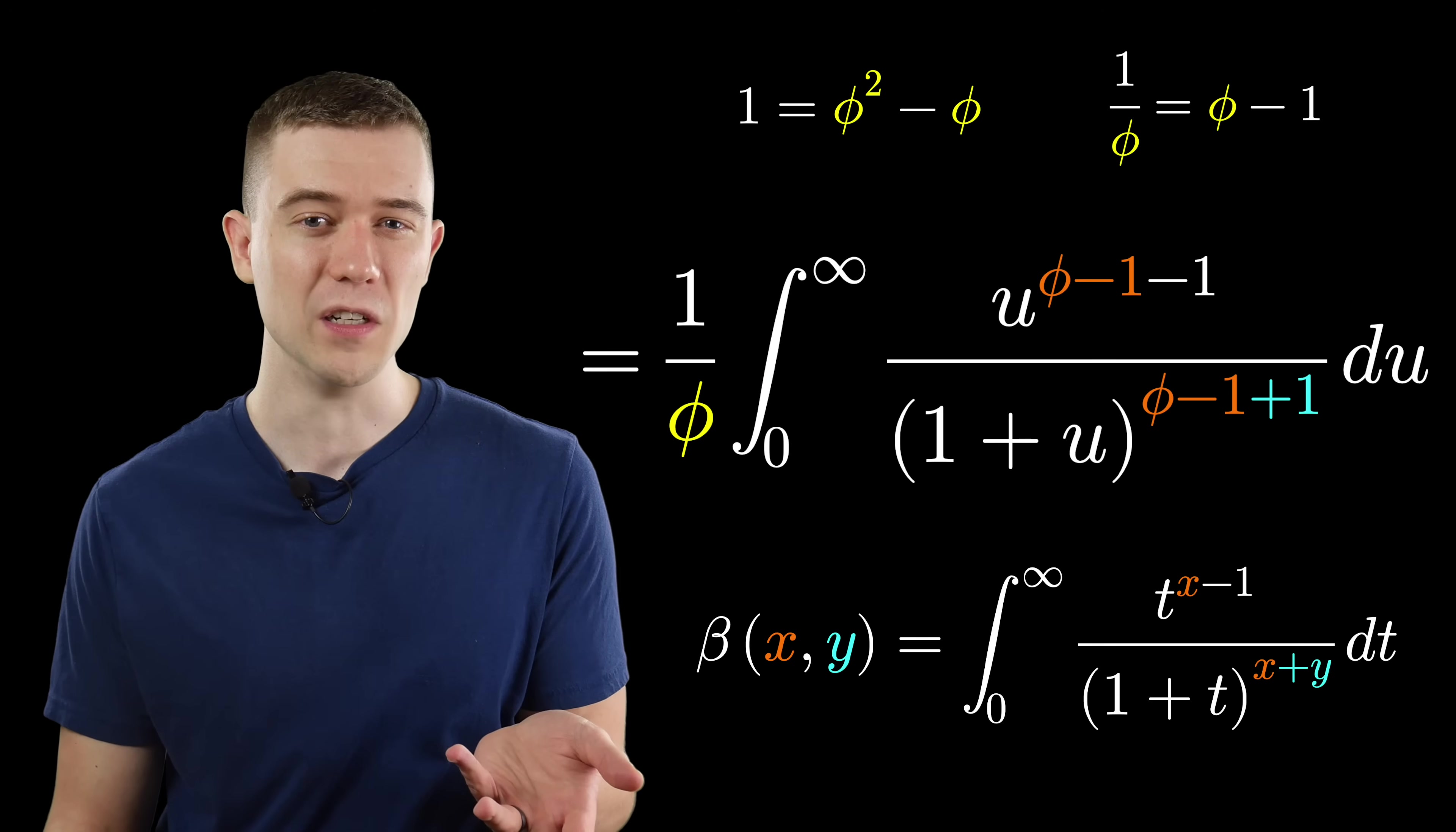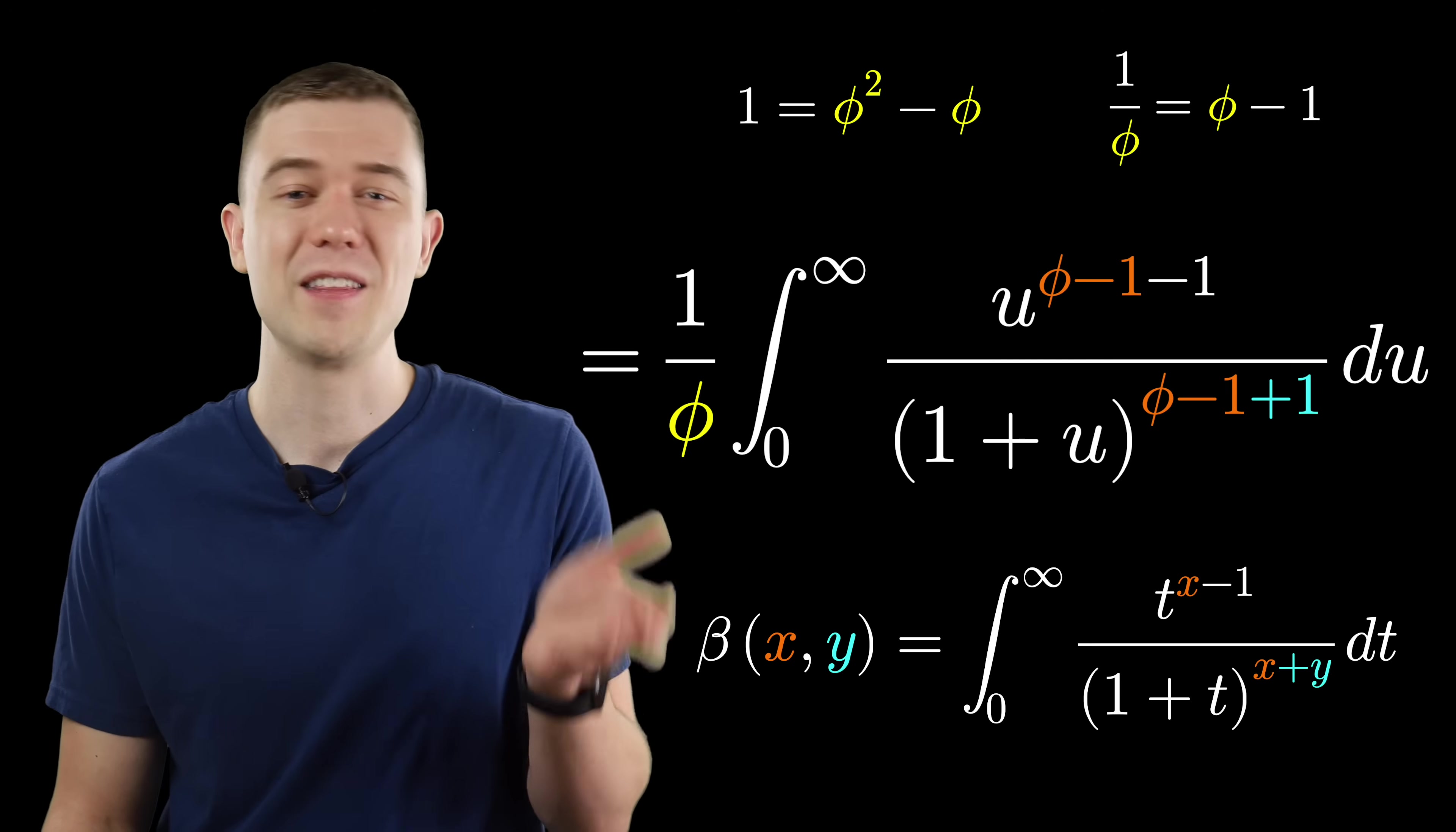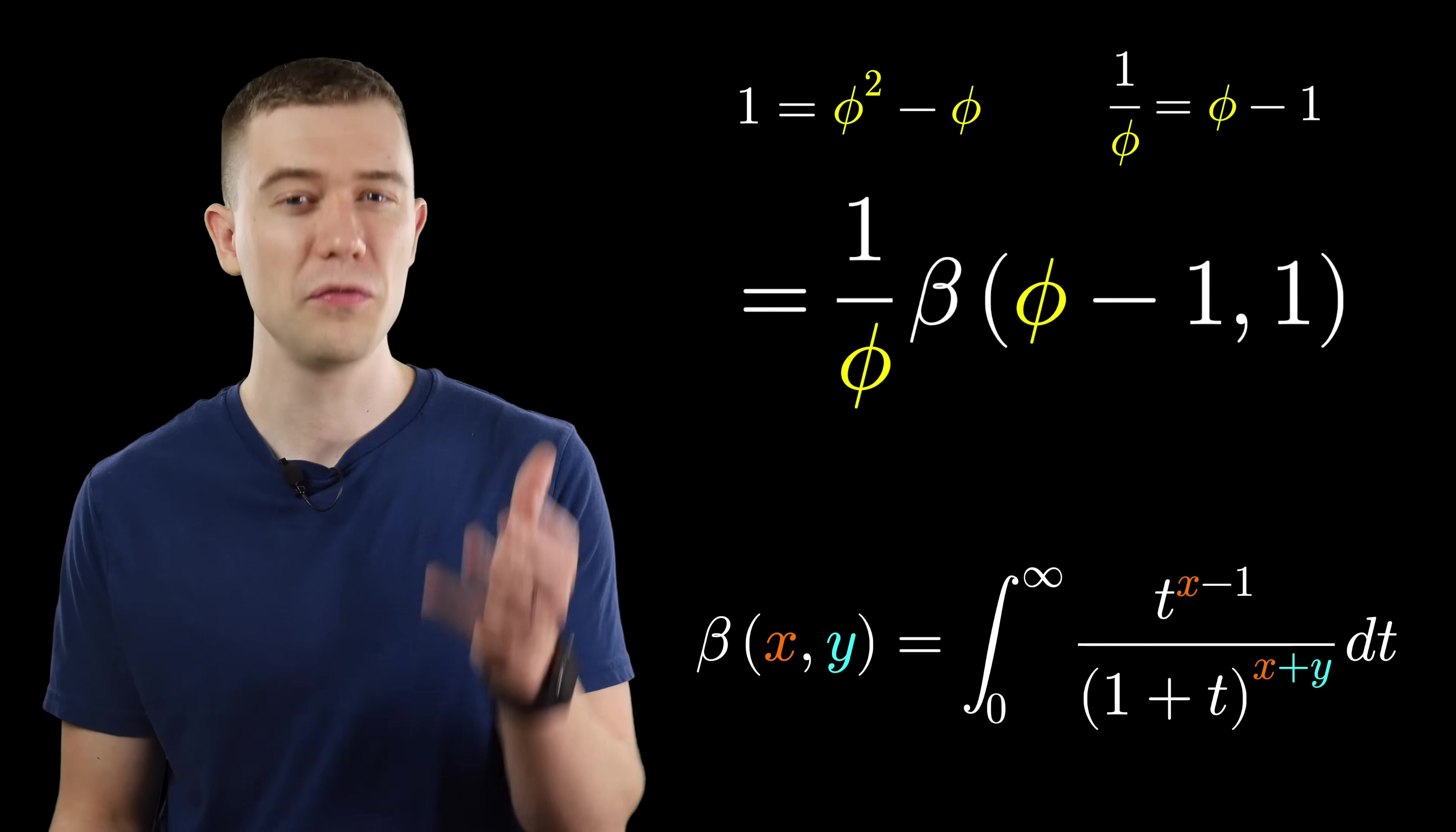X in the beta function is phi minus 1 inside our integral. And y in the beta function is just 1 inside our integral. That's why we left the exponents the way that we did. Noticing that actually completes our integration. We have 1 over phi, beta of phi minus 1 and 1.